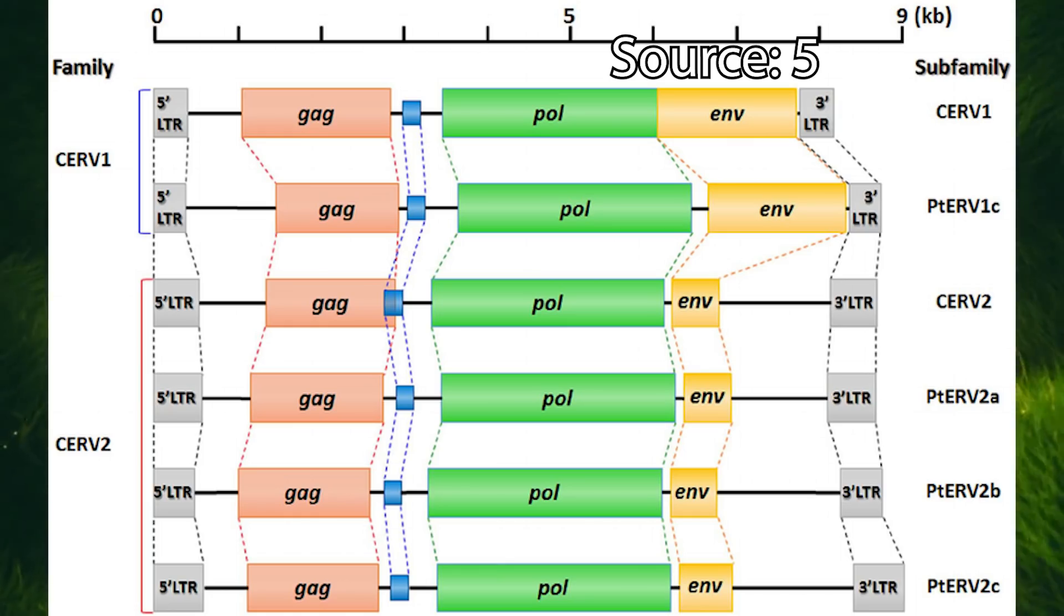In between the two LTR sequences, we find the genetic material to encode for three main proteins. Group antigens, abbreviated GAG, which are the proteins that make up the core of the virus, POL, which codes for the reverse transcriptase, and ENV, which is the envelope protein that codes for the envelope that makes up the body of the virus. Each individual virus is different, but they all have these same structures.